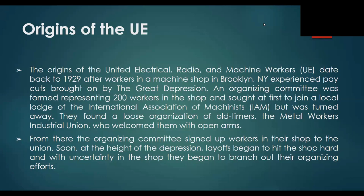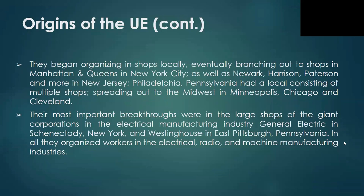From there, the organizing committee signed up workers in their shop to the union. At the height of the Depression, layoffs began to hit the shop hard, and with uncertainty in the shop, they began to branch out their organizing efforts — organizing shops locally, eventually branching out to shops in Manhattan and Queens, as well as Newark, Patterson, and other places in New Jersey. Philadelphia, Pennsylvania had a local consisting of multiple shops, spreading as far as the Midwest in Minneapolis, Chicago, and Cleveland. Their most important breakthroughs were in the large shops of the giant corporations in the electrical manufacturing industry — at General Electric in Schenectady, New York, and Westinghouse in East Pittsburgh, Pennsylvania. In all, they organized workers in the electrical, radio, and machine manufacturing industries. All of these organizing efforts were done in secret, at a time before unions had a legal right to exist.